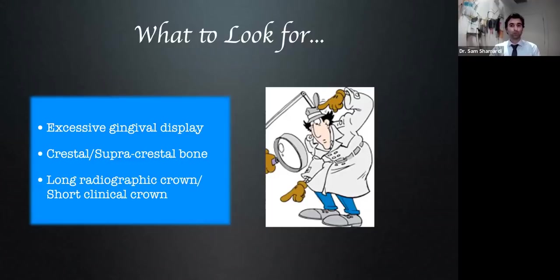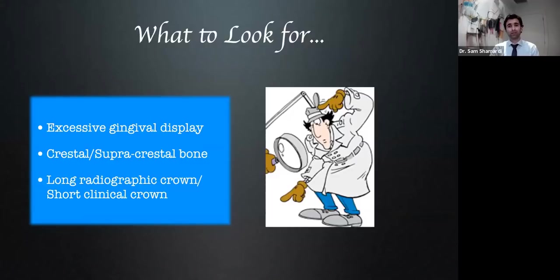Another thing we look for is long radiographic or short clinical crowns, because whether or not the case is indicated aesthetically, we have to make sure the tooth structure itself can support these procedures. Crown lengthening in any form will require some bone removal, so if we don't have enough root length, that could be a consideration. Excessive gingival display with corresponding supracrestal bone often results in what we see as short, stumpy-looking clinical crowns — another key sign.